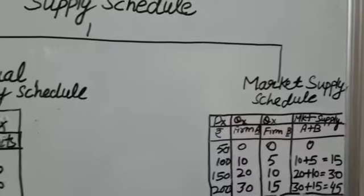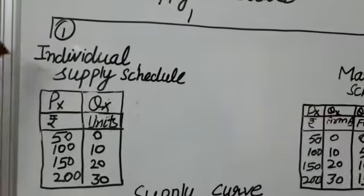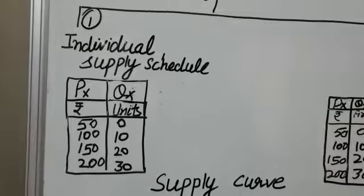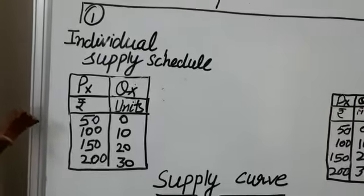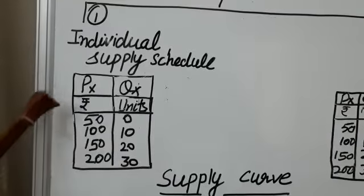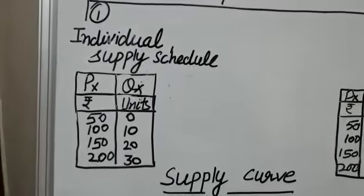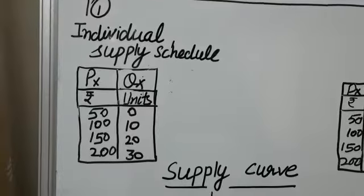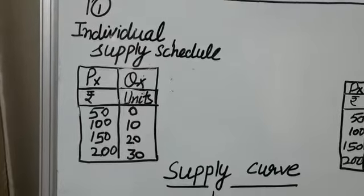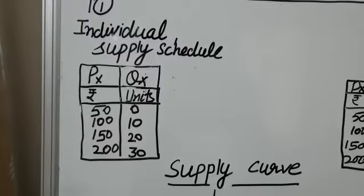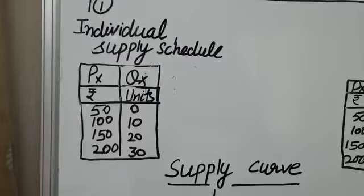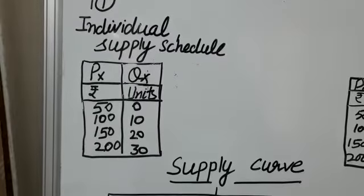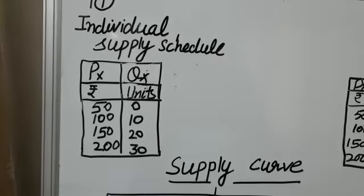Now you look at the table — individual supply schedule. Prices of commodity X are given in the first column and quantity supplied is given in the second column. When price is Rs. 50, the seller is not willing to sell even a single unit, as he may not be able to cover the cost of production.